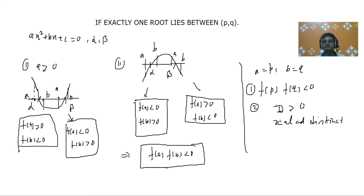So we are going to discuss one example just to understand it in a very clear way. So the example is: find m if exactly one root of equation x² - 2mx + m² - 1 = 0 lies in interval (-2, 4).